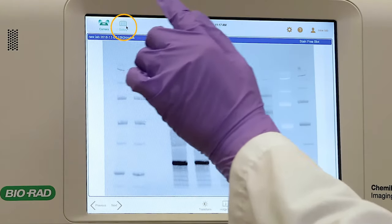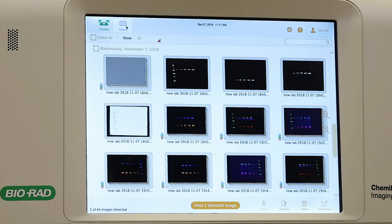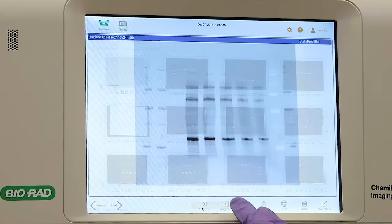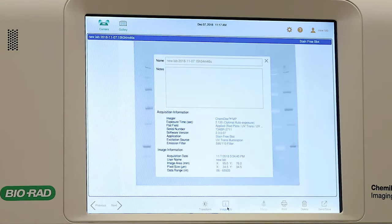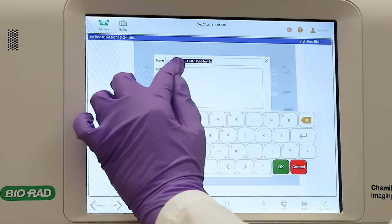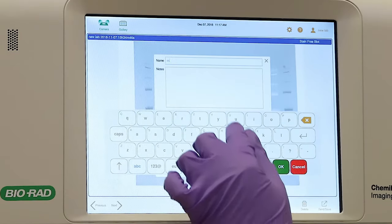Your images will be automatically saved and exported to the gallery. Tap the image info icon. Here, you can enter a custom name and any notes you'd like to include about your image or experiment.